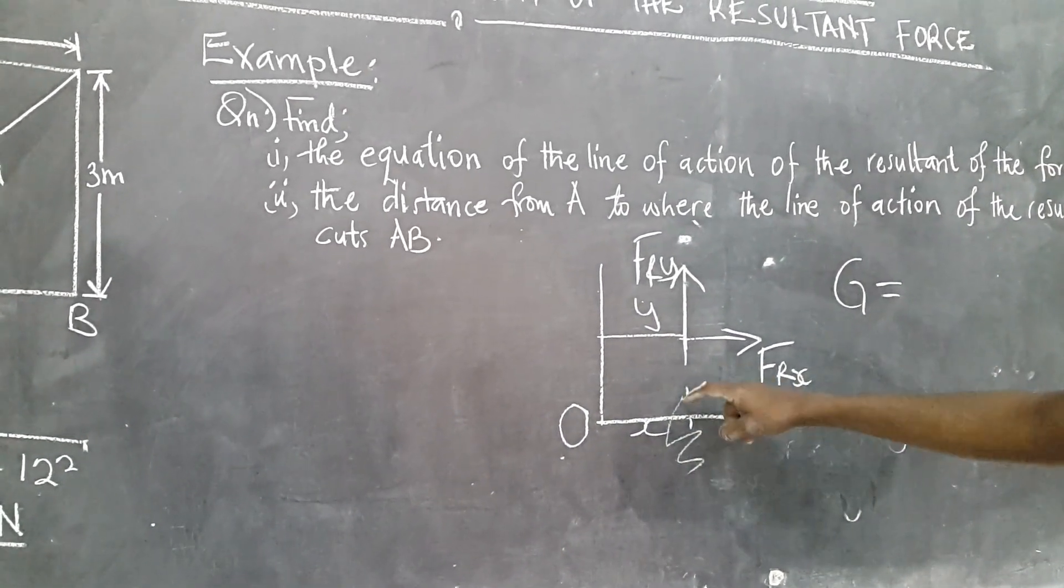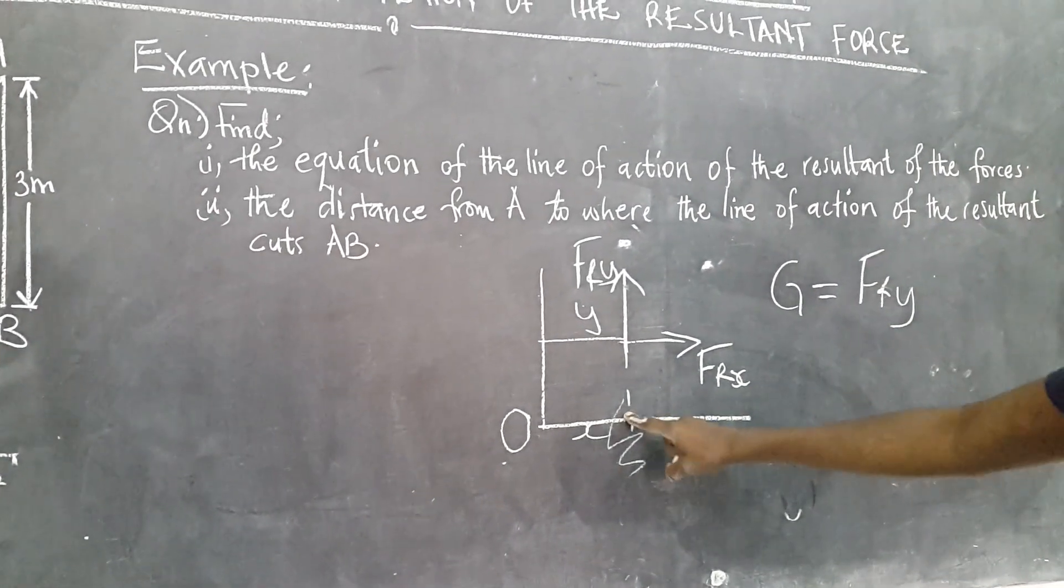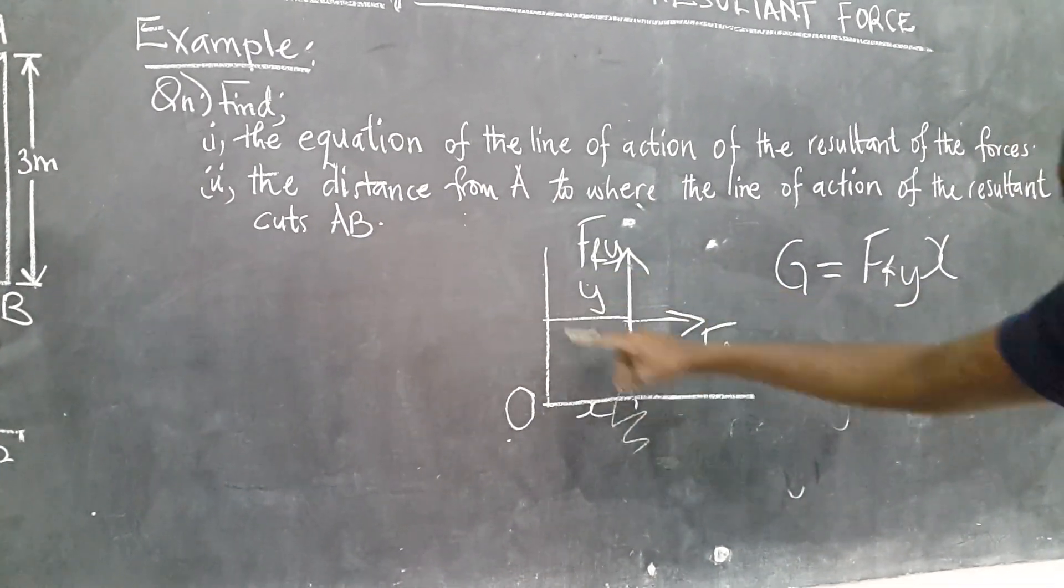we can find the moment of these two forces about O, when we say G is equal to FRY times its perpendicular distance X and is positive because it is anticlockwise,